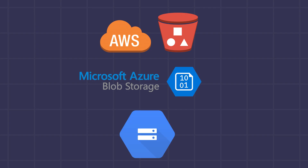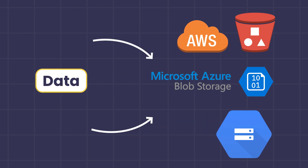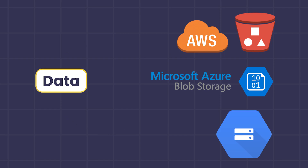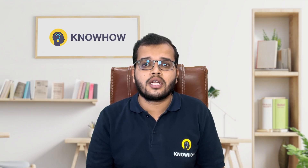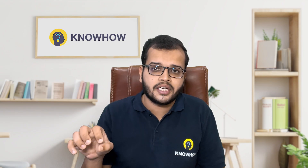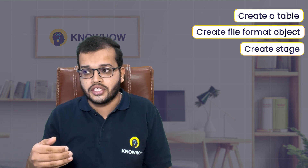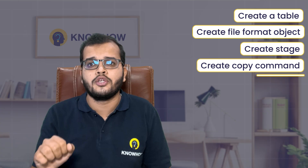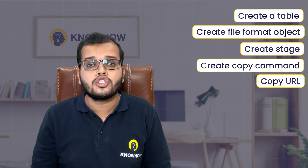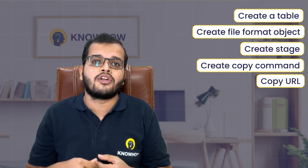Whenever we are trying to upload any file into our cloud provider — for AWS that's an S3 bucket, for Azure it's Azure Blob Storage, and for GCP there's another file storage option — if we want to get that file into our database, we create a table, create a file format object, create a stage, then use a copy command with a URL to load the data into our Snowflake database.